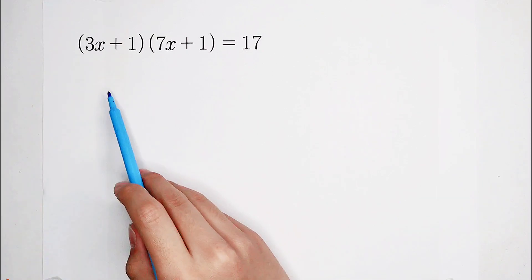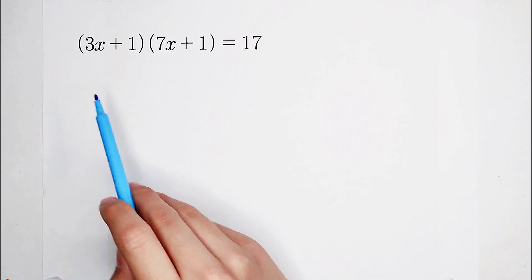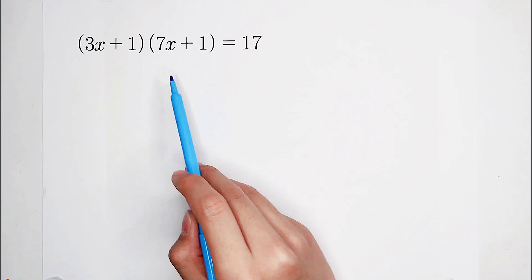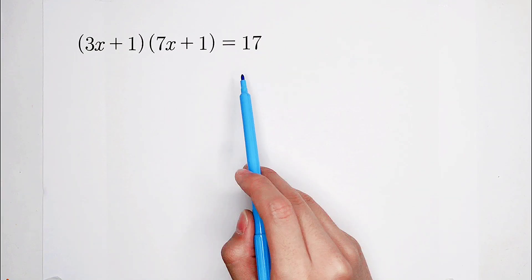Welcome to MathWino. Solve this equation about x: 3x plus 1 times 7x plus 1 equals 17.